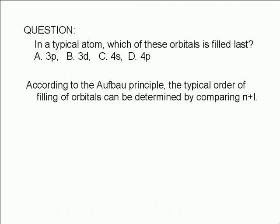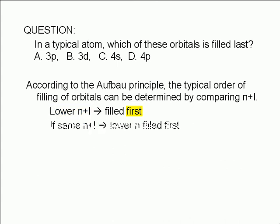According to the Aufbau principle, the typical order of filling of orbitals depends on the sum of the principal and orbital quantum numbers, n and l. Orbitals with the lower n plus l value are filled first. If two orbitals have the same n plus l value, the orbital with the lower n value is filled first.